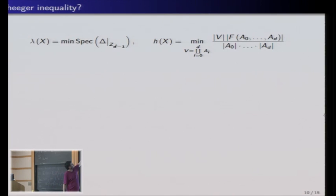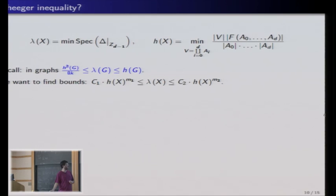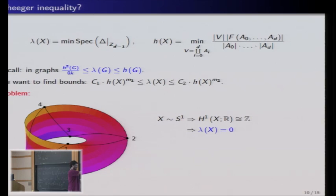So here is the spectral gap, and here is our Cheeger constant. In graph, we had something of this form. Lambda was bounded from above and below. If we try to look for something like this, we're going to get disappointed. So here is a counterexample. This is a minimal triangulation of the Möbius strip. Because of what I said earlier, the Möbius strip is homotopic to the circle. It has non-trivial first homology, which means that the spectral gap is zero. But if you go and compute the Cheeger constant, it's not zero. So you won't have anything of this form.